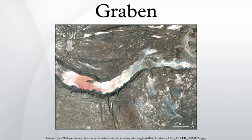Horsts are parallel blocks that remain between graben. The bounding faults of a horst typically dip away from the center line of the horst. Single or multiple graben can produce a rift valley.